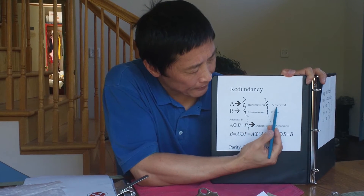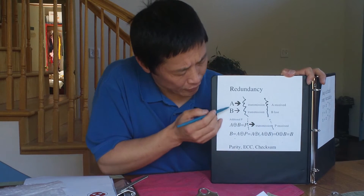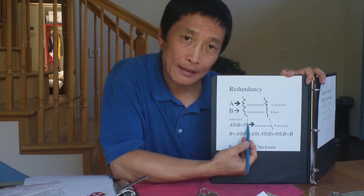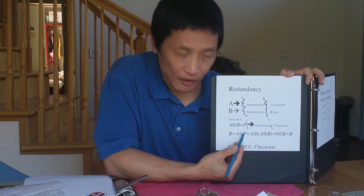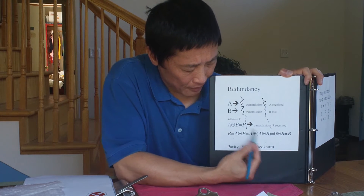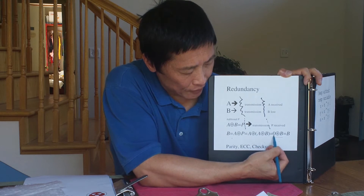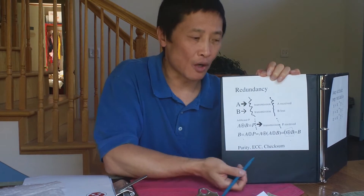There's also a redundancy application. Suppose you want to transmit signals A and B over a long, noisy line. At the end, say A is received but B is lost. Without any redundant bits, you cannot recover B. But suppose in addition to A and B, you also transmit P, where P is the exclusive OR of A and B. If you receive A and P, you can recover B as simply A exclusive OR P. Plugging in P = A⊕B and using the property that A⊕A = 0, you get B. This is very simple parity. More complicated algorithms like ECC and checksums all use this property.